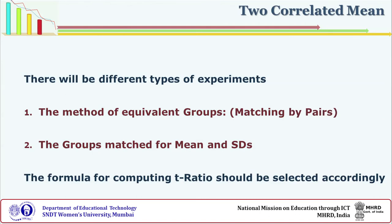We have seen the formula for the single group method. Similarly, other situations arise with different experimental designs. For example, you may select a design of equivalent groups where you match pairs. That will also give you two correlated means. Another design has two groups matched on their means and standard deviations, also giving you two correlated means. For each, you use an appropriate formula to find out whether the difference between the two correlated means is significant, giving you the confidence to reject the null hypothesis and affirm the alternate hypothesis stated earlier.